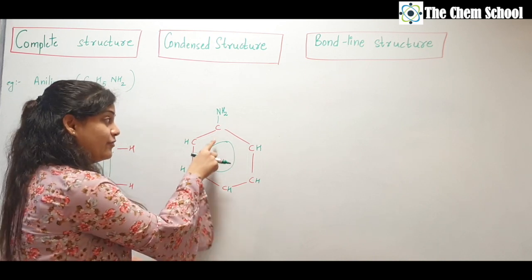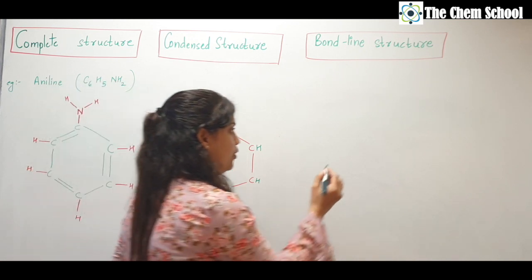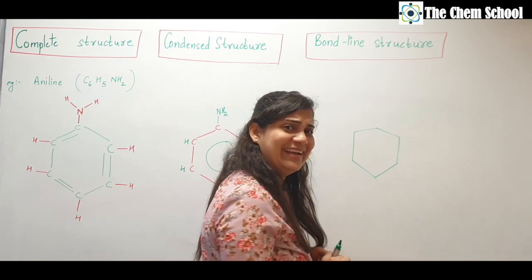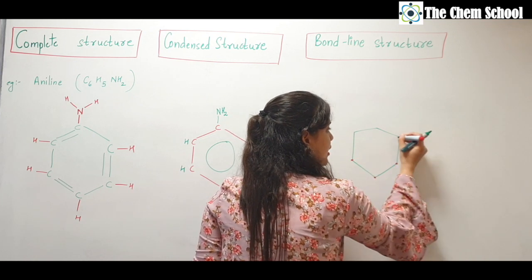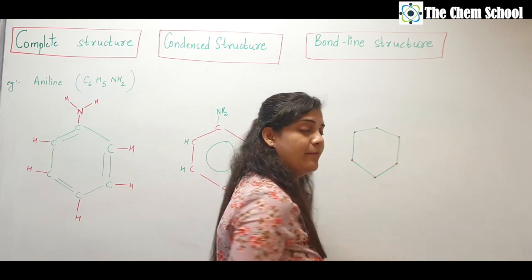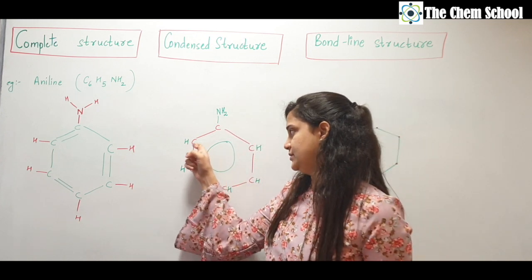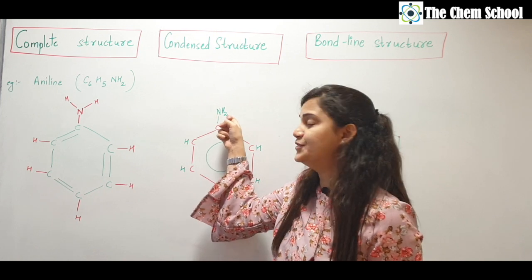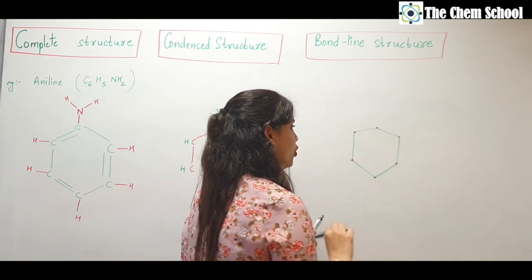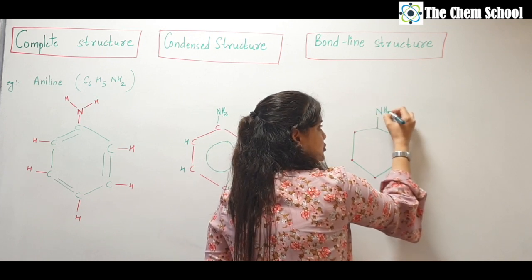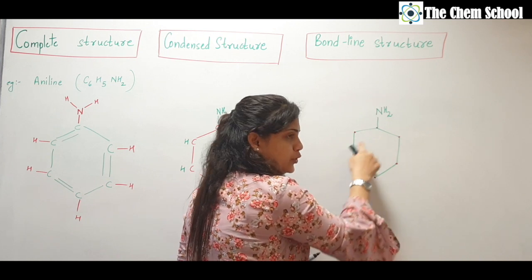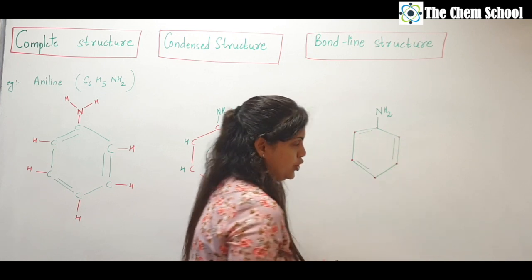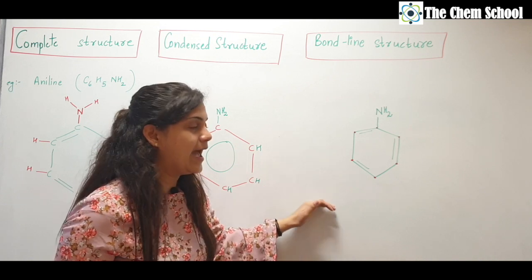For the bond line of aniline, draw a hexagon — it is understood that each corner is a carbon. Remember, you do not show hydrogen on carbons, but you must show hydrogen on hetero atoms. Nitrogen is the hetero atom here with two hydrogens, so write NH₂ at that position. In the center you can place a circle or draw alternate double-single bonds. This is the bond line structure for aniline.